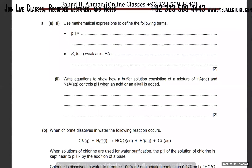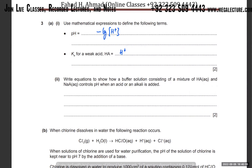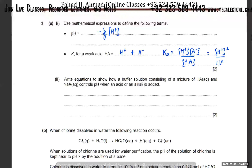Write the expression: pH = −log[H⁺]. For Ka of a weak acid: Ka = [H⁺][A⁻] / [HA], or equivalently Ka = [H⁺]² / [acid concentration].